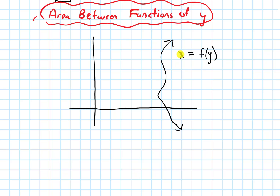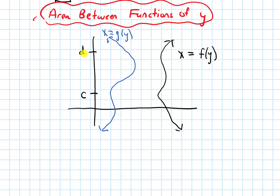So this is what I call x being a function of y. And then I'll have some other function, and I'm going to call this one x equals g of y. So both of these have the x isolated, and they're both functions of y. Let's say I want to find the area between these on the interval from c to d on the y-axis. If I draw horizontal lines at c and at d, we're talking about this region between these two curves on that interval.